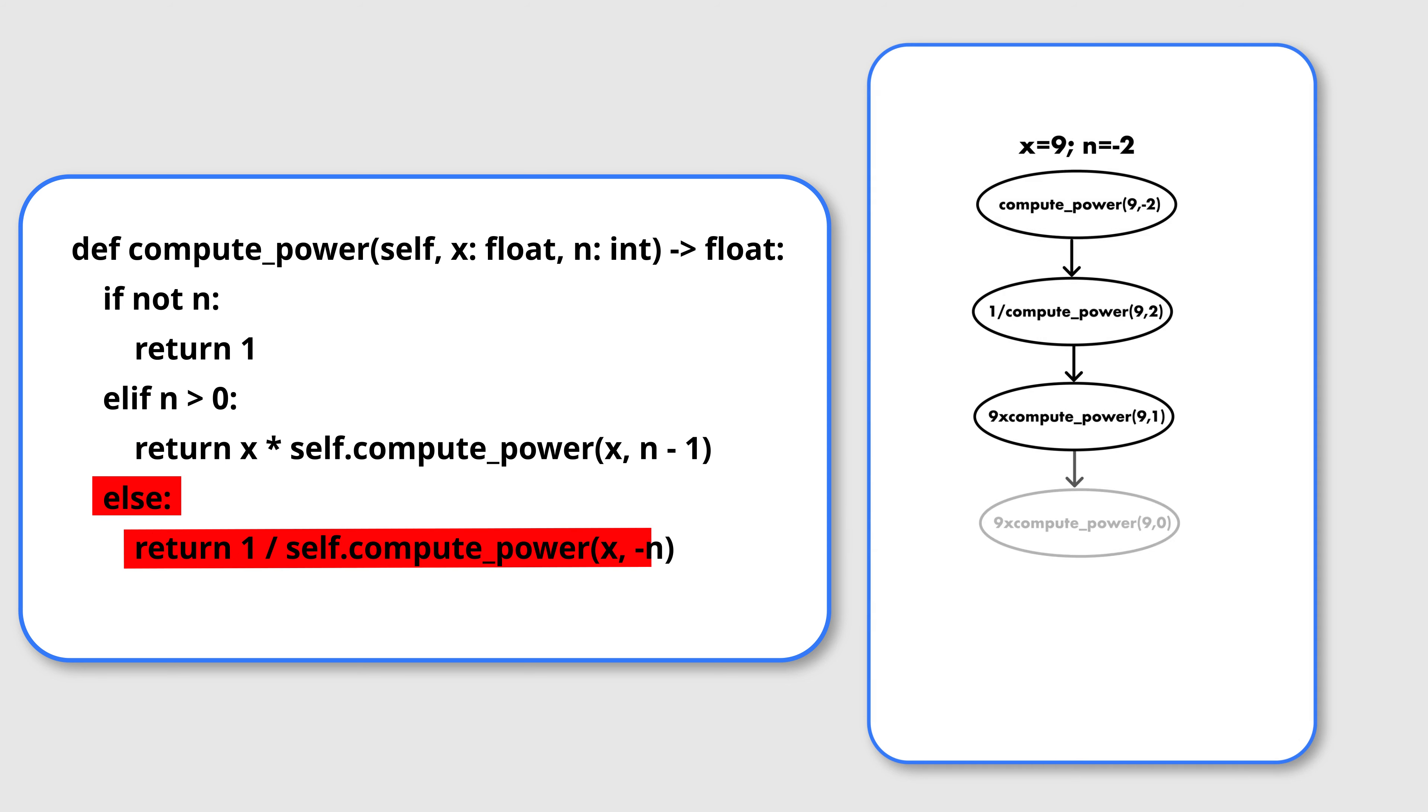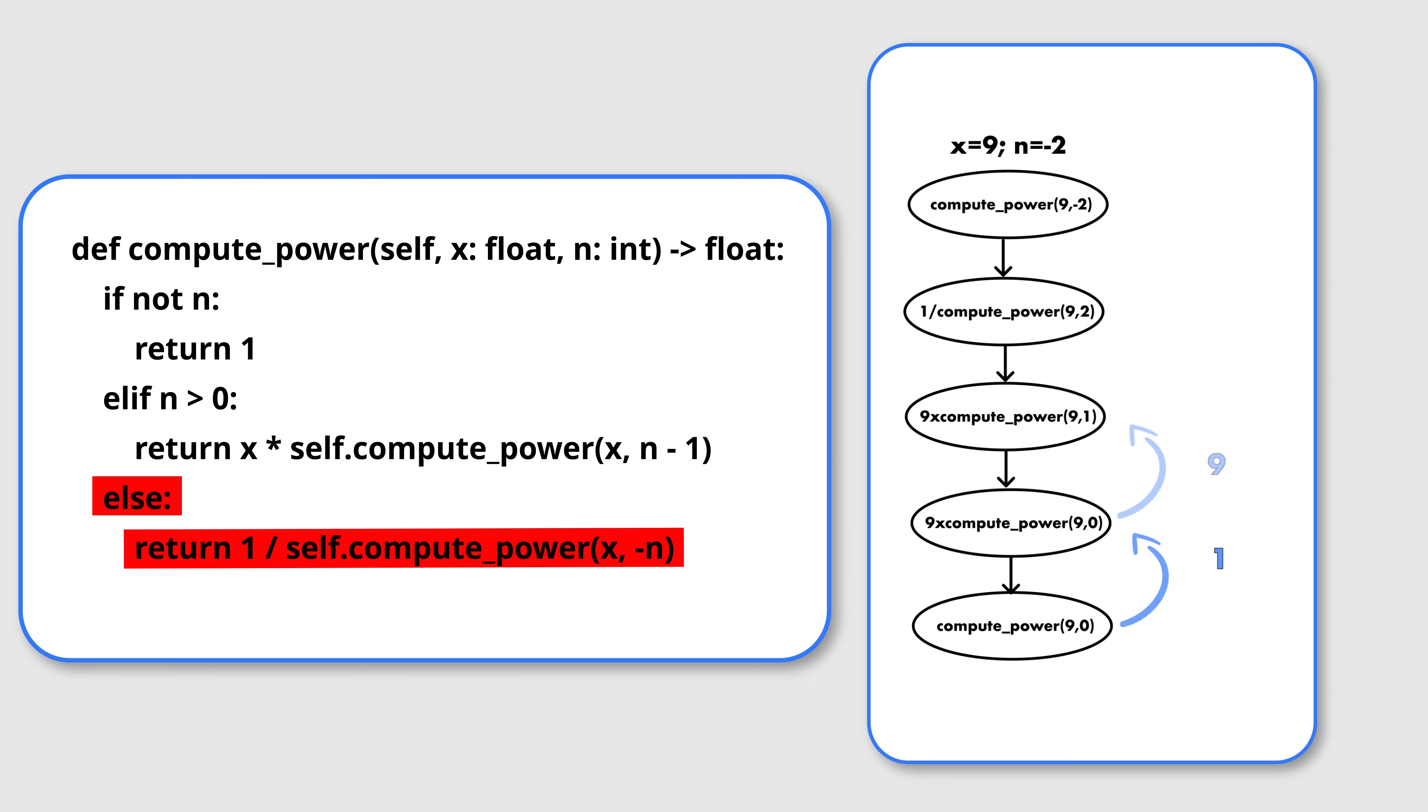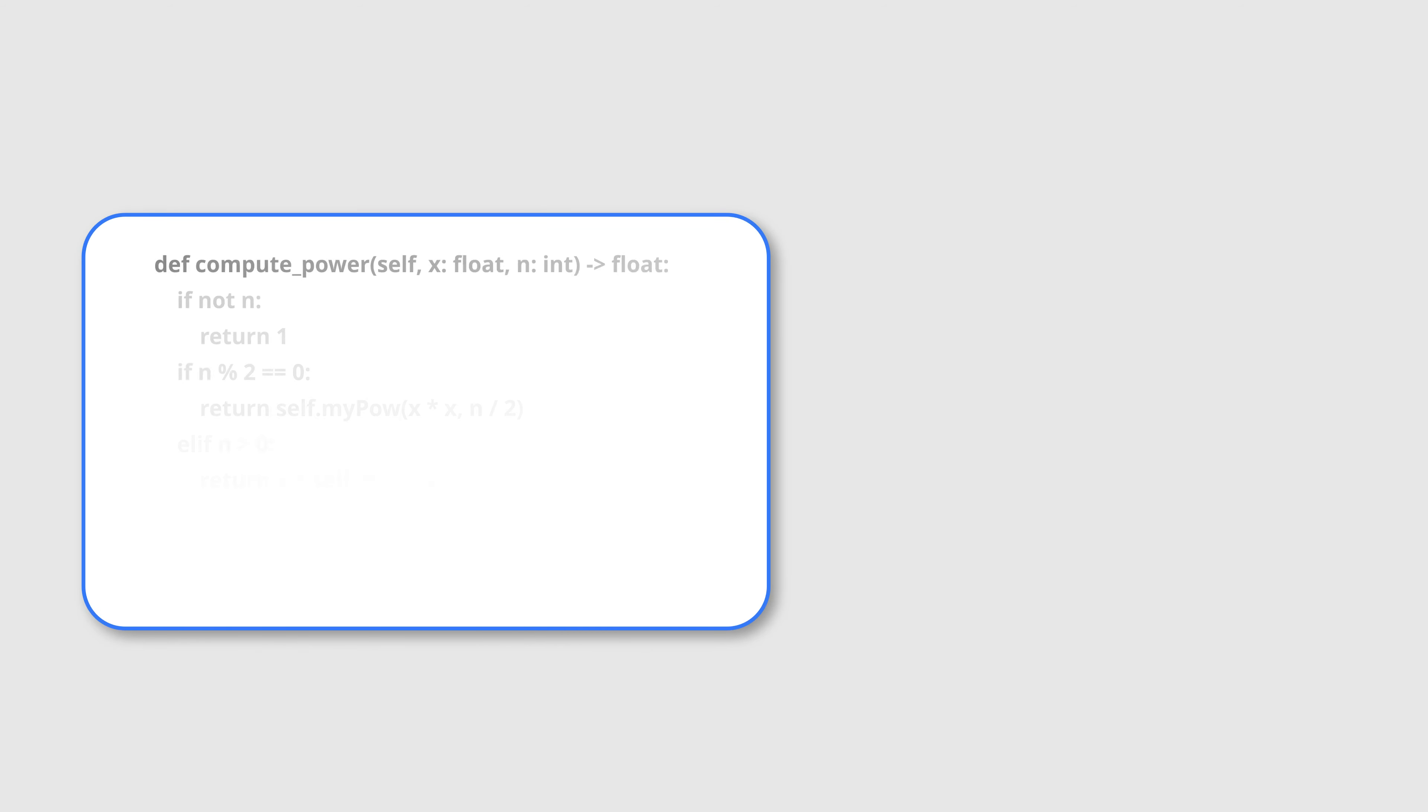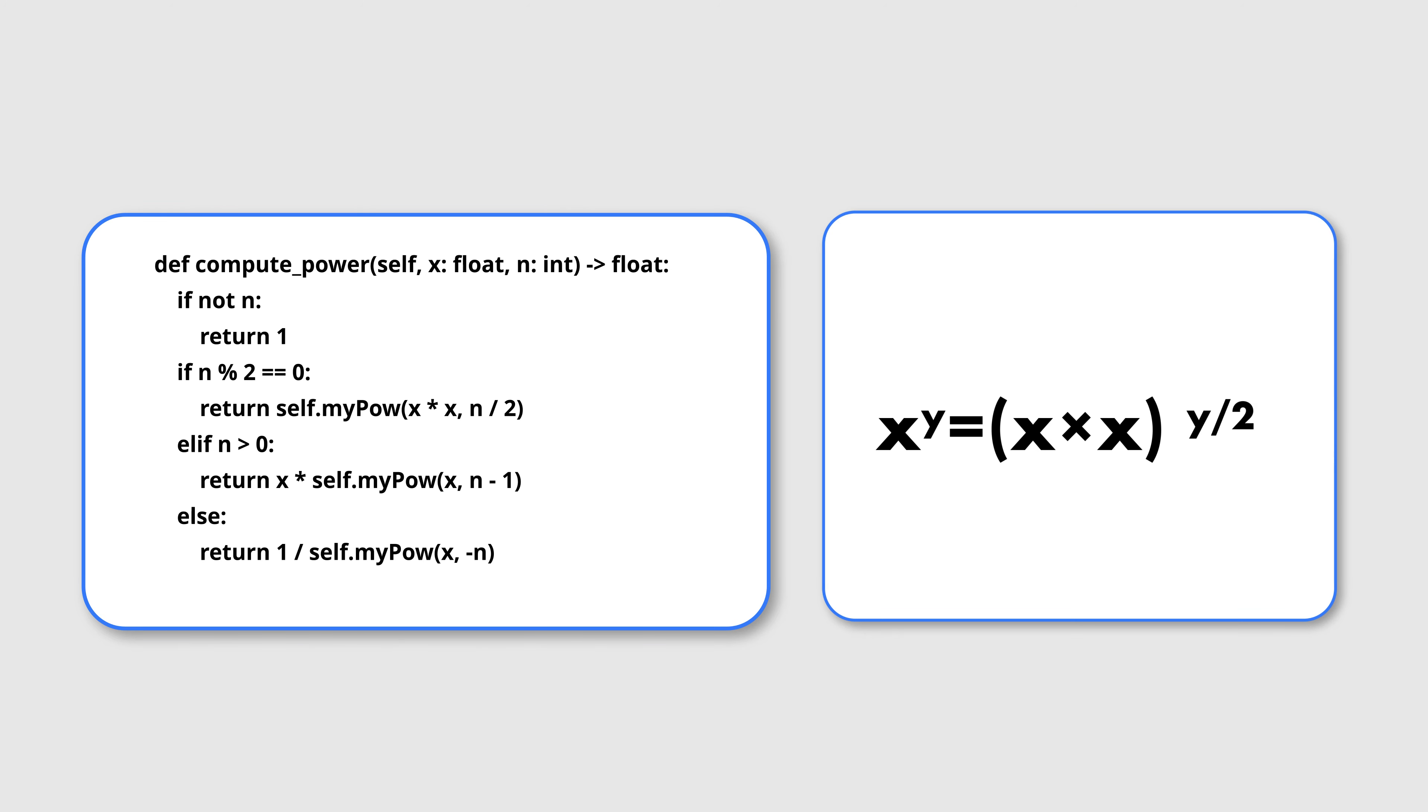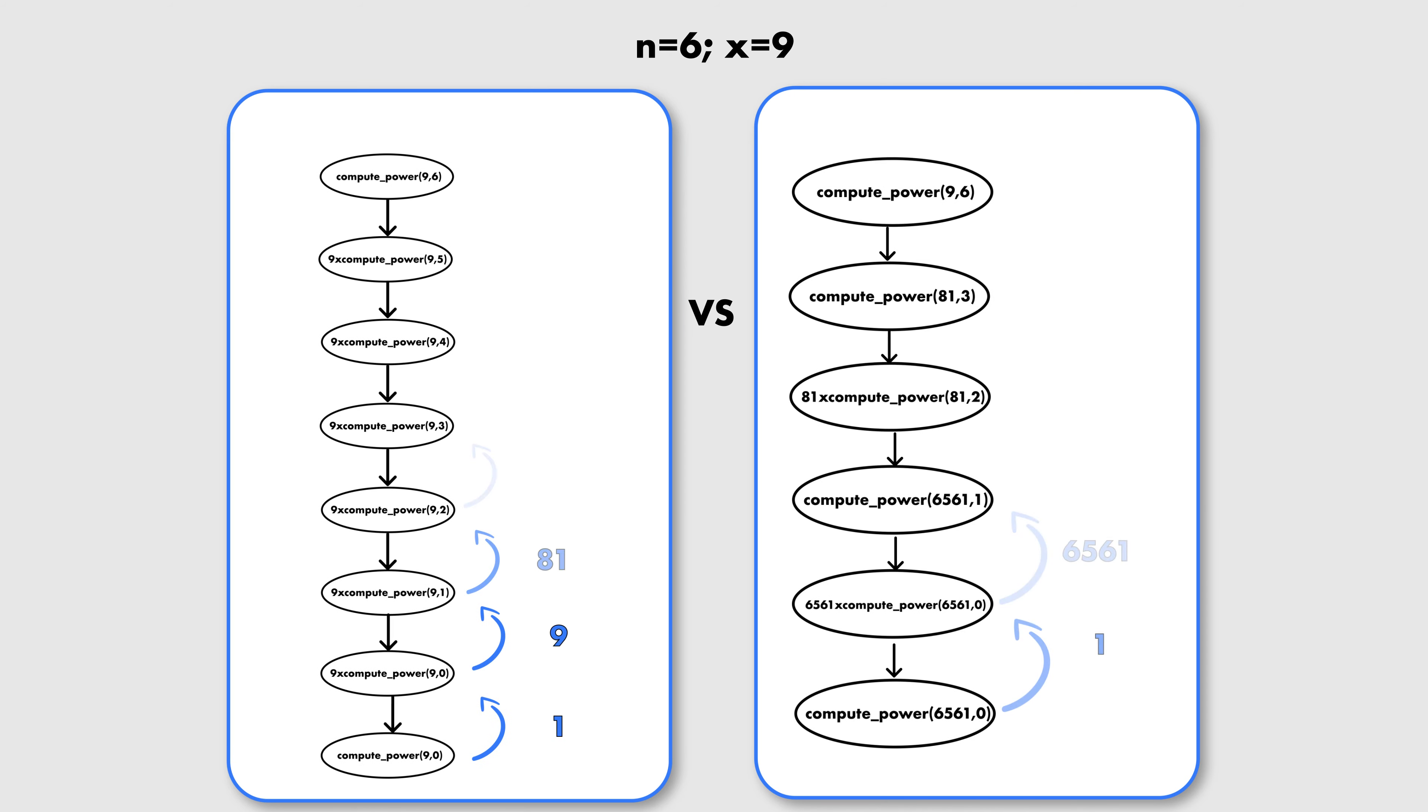If n is negative, then we just use algebra to compute the value of the number to the power of minus n and then return that value inverted. One small observation before we are done with this question is that if n is an even number, we can do better than reducing the decision space by 1. We can actually halve it because, thanks to algebra, in that case we know we can square the number. So we will be exploring less states in the decision tree which means that we will go less deep in the call stack and therefore use less memory and time.